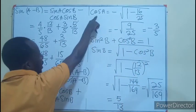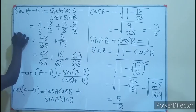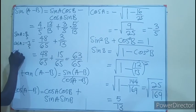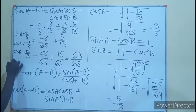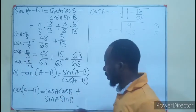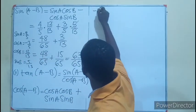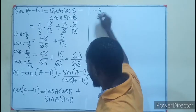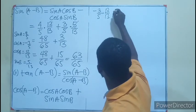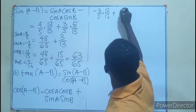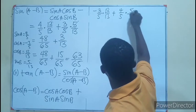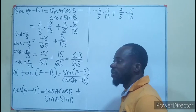Let's recap our values: sin A = 4/5, cos A = −3/5, cos B = 12/13, sin B = 5/13. Substituting into the formula: cos(A - B) = (−3/5)(12/13) + (4/5)(5/13). The 5s in the second term cancel, giving 4/13. We need a common denominator of 65, so 4/13 = 20/65.